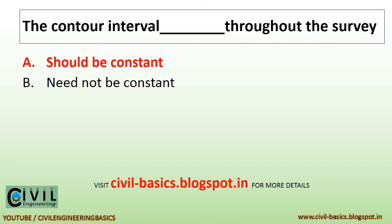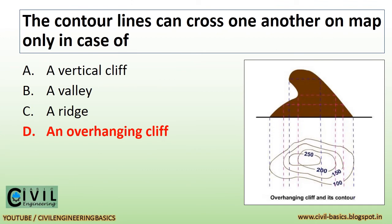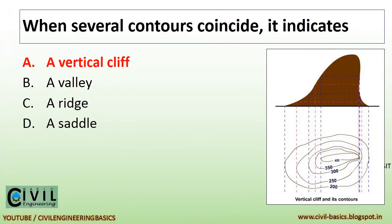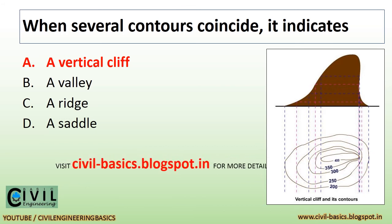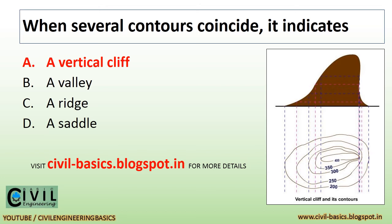The contour interval should be constant throughout the survey. The contour lines can cross one another on a map only in the case of an overhanging cliff. When several contours coincide, it indicates a vertical cliff.